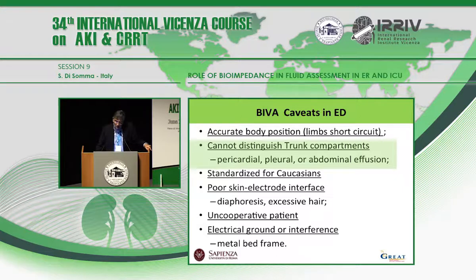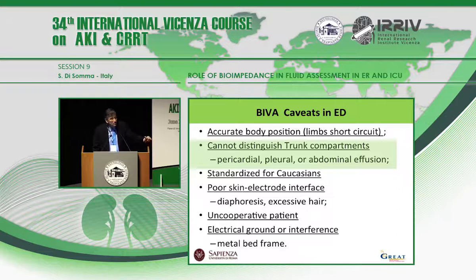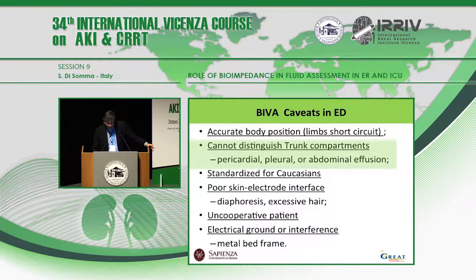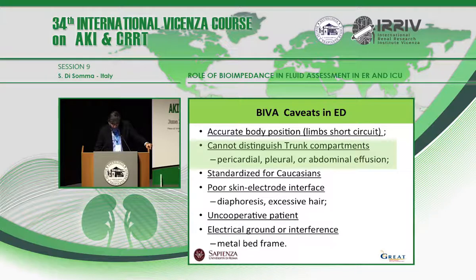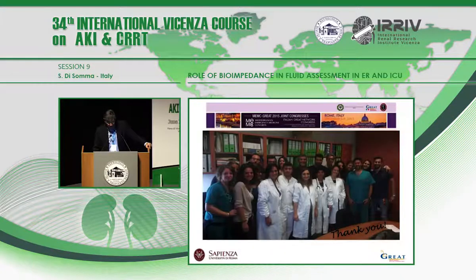I want to highlight the caveats with BIVA. Like every tool, it is easy to use, non-invasive, and very cheap, but you must be clear that it cannot measure pericardial or peritoneal/abdominal effusions. You must be very careful placing the electrodes in the presence of diaphoresis or excessive sweating. The patient needs to cooperate, and metal implants are a contraindication. Thank you very much for your attention.